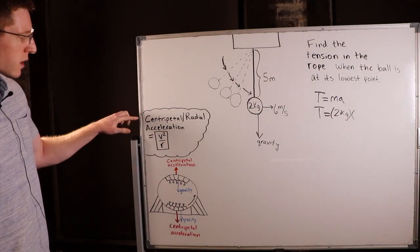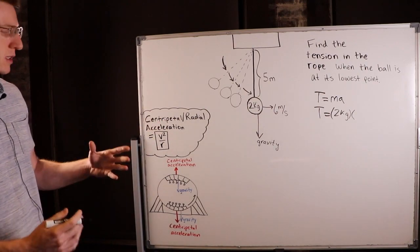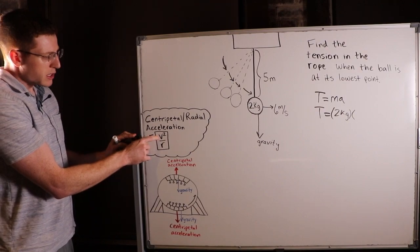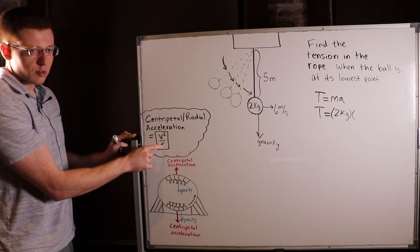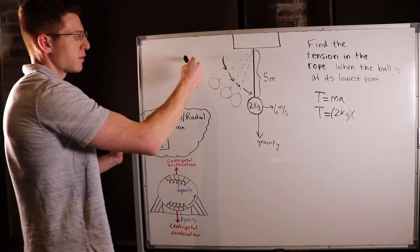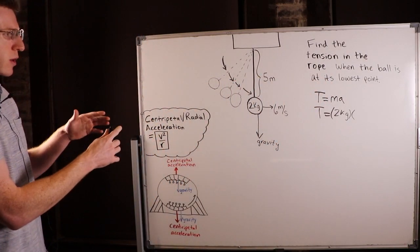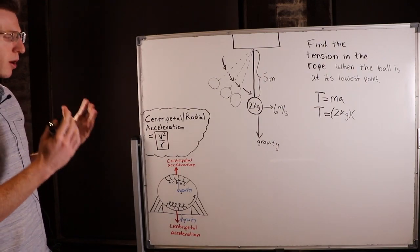And that's because of something called centripetal acceleration, also known as radial acceleration. And it's expressed with velocity squared over radius of the circle that you're moving in. In this case, we have a partial circle. Centripetal acceleration applies whenever you're moving in a circle or a partial circle.